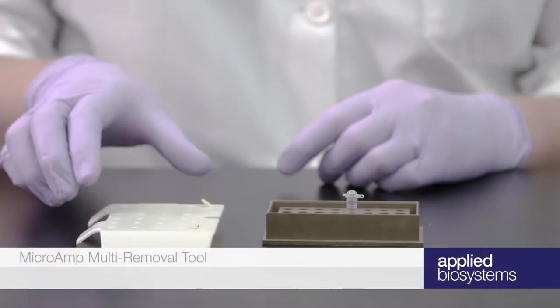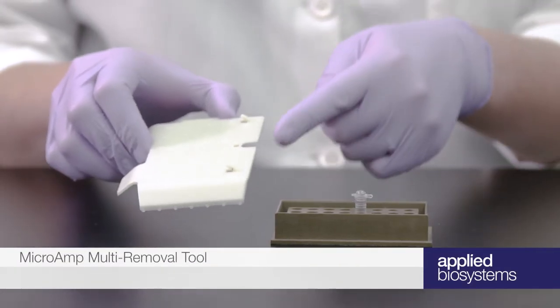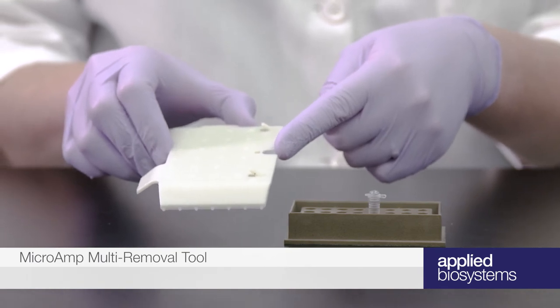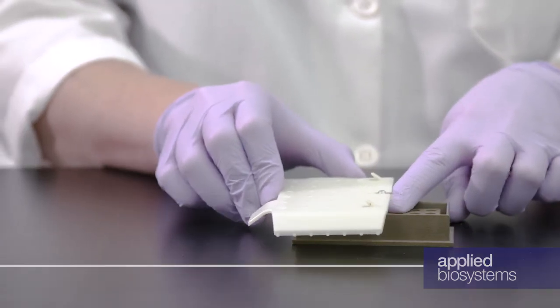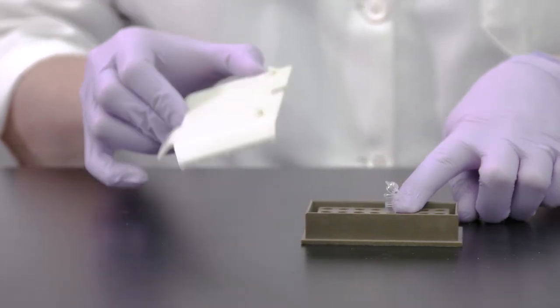You can use the multi-removal tool to open the attached caps of individual tubes by inserting the tube into the U-shaped slot. There's a small catch on the tool that will pry the cap open.